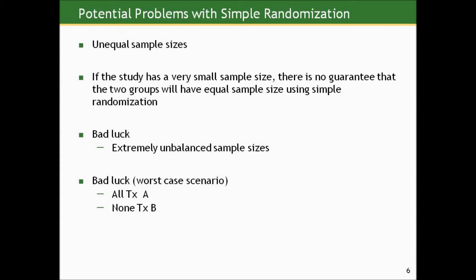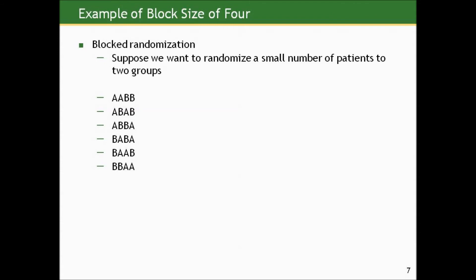So what is one possible solution to that? And this is sometimes used for smaller studies. Something called blocked randomization. Sometimes we want to randomize a small number of subjects to two groups, we'll call them A and B. One thing we could do is make blocks of four containing two A's and two B's. And then we look at every possible permutation of two A's and two B's. And there's six of them, six unique ones. And here they are laid out for you.